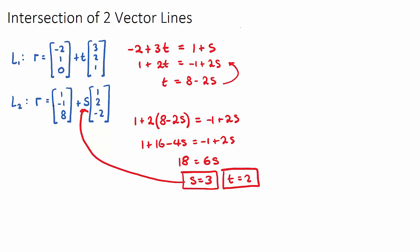So if I substitute s equals 3 into L2, I know that I'm going to get 1, negative 1, 8, plus—now instead of s, I'm going to put 3—and it will be 1, 2, negative 2.